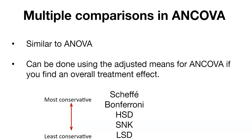Just like in ANOVA, we can use multiple comparisons in ANCOVA. We do this using the adjusted means if we find an overall treatment effect. If we run ANCOVA and don't find a treatment effect, we can stop the analysis — there's no need to look for which specific treatments differ if the hypothesis test found none are different. But if we do find an overall treatment effect, we can use a multiple comparison procedure, ranging from conservative to more liberal tests.